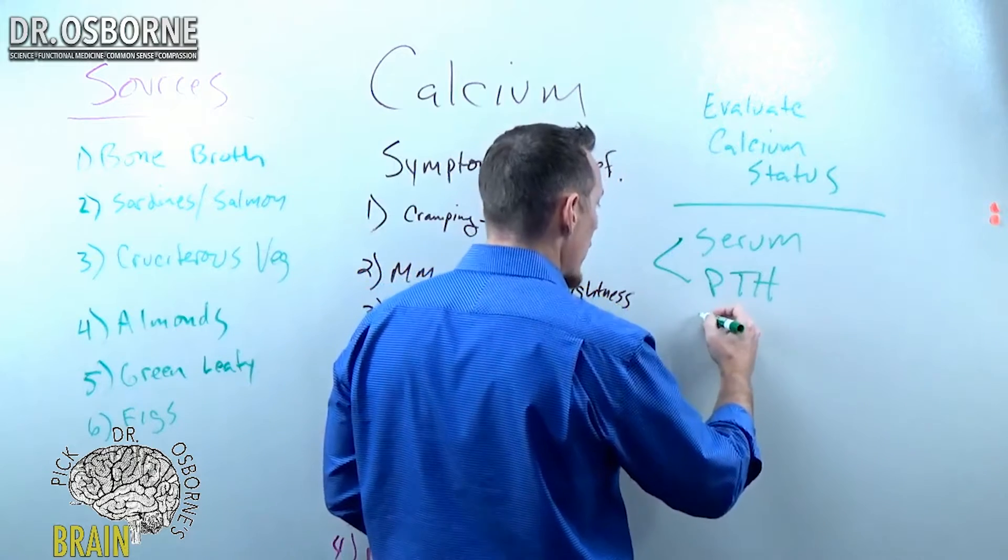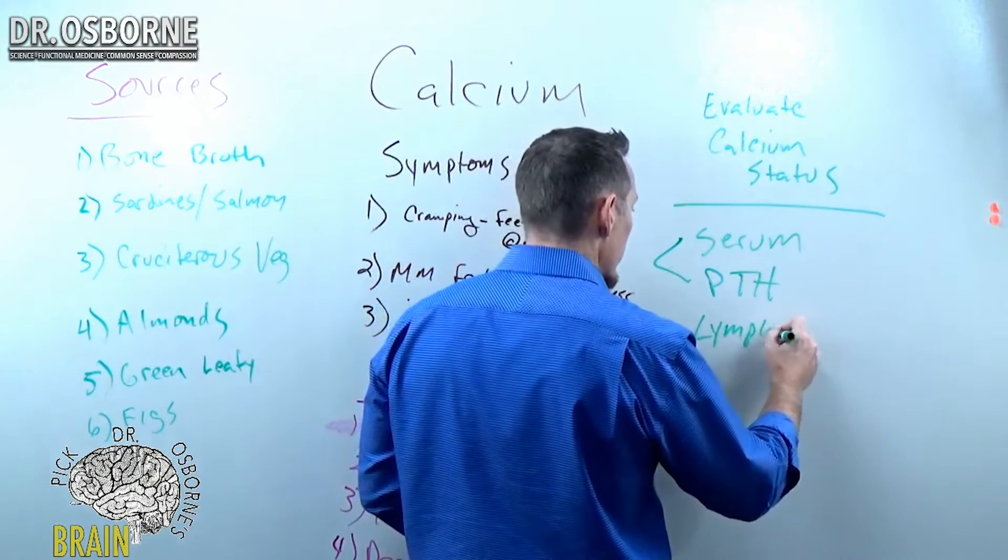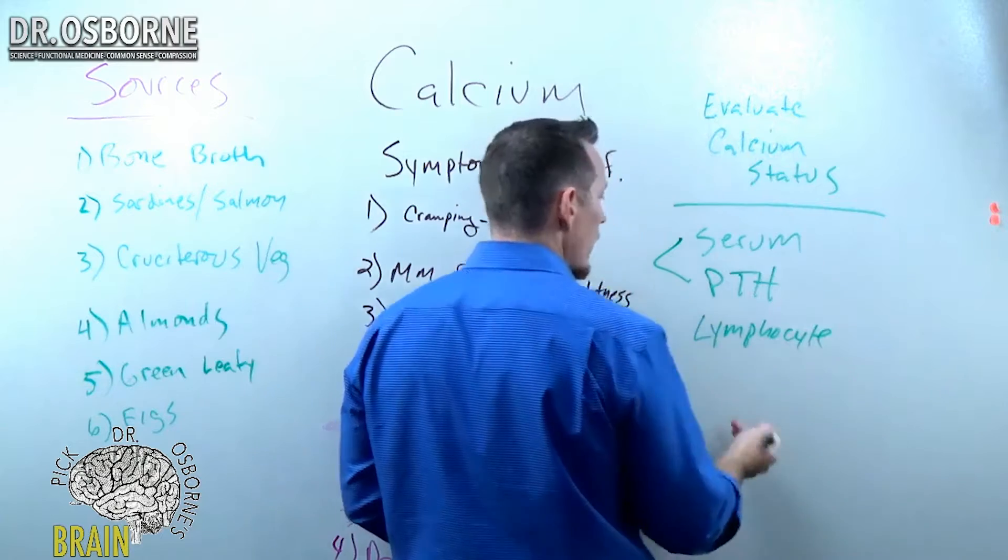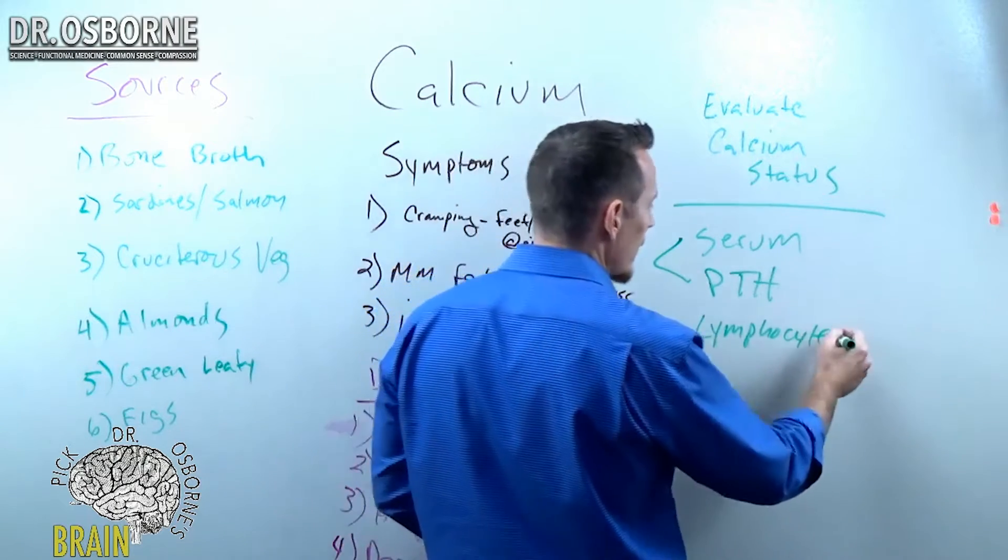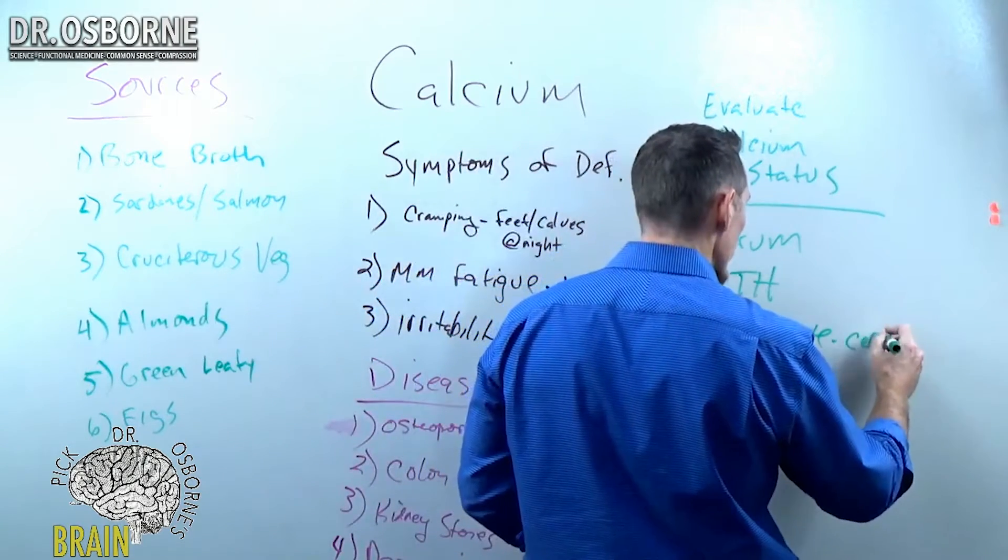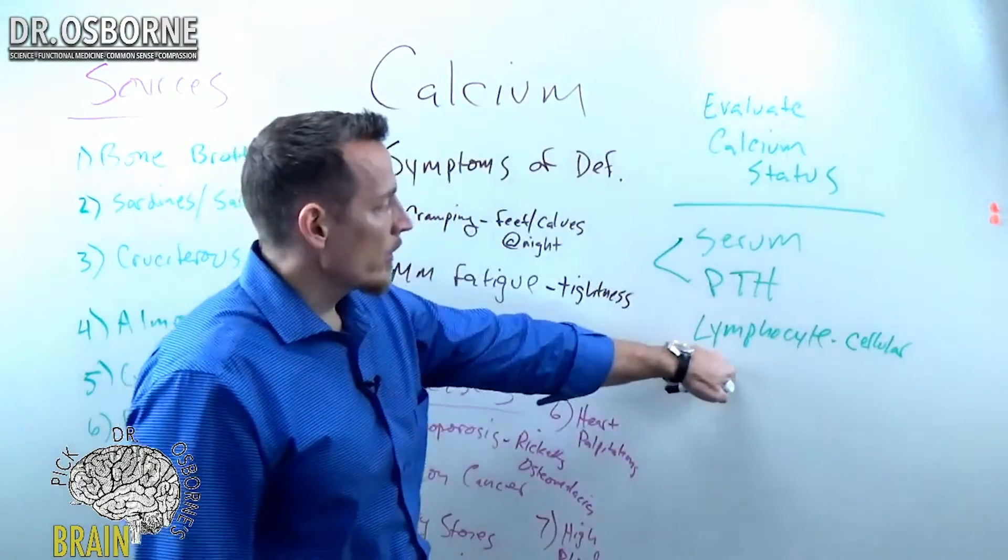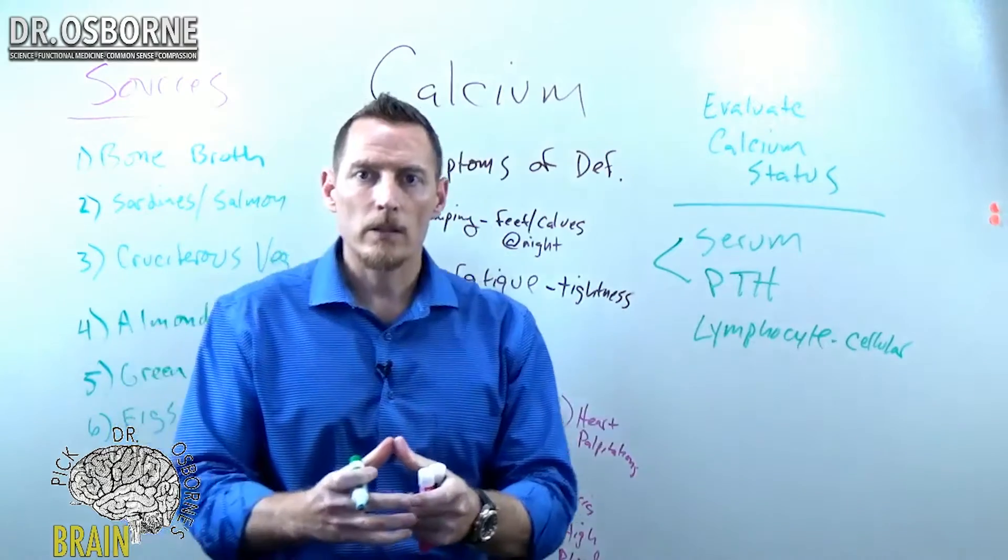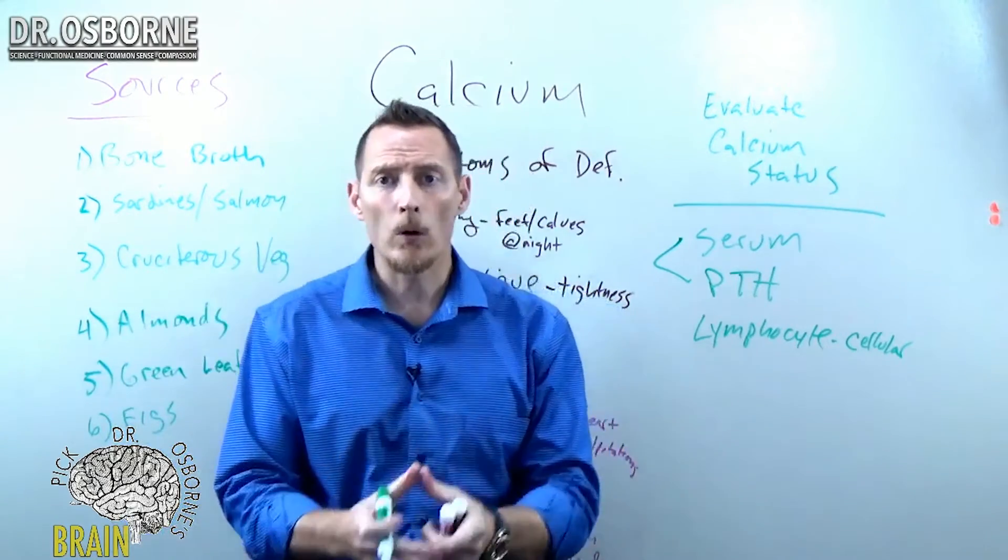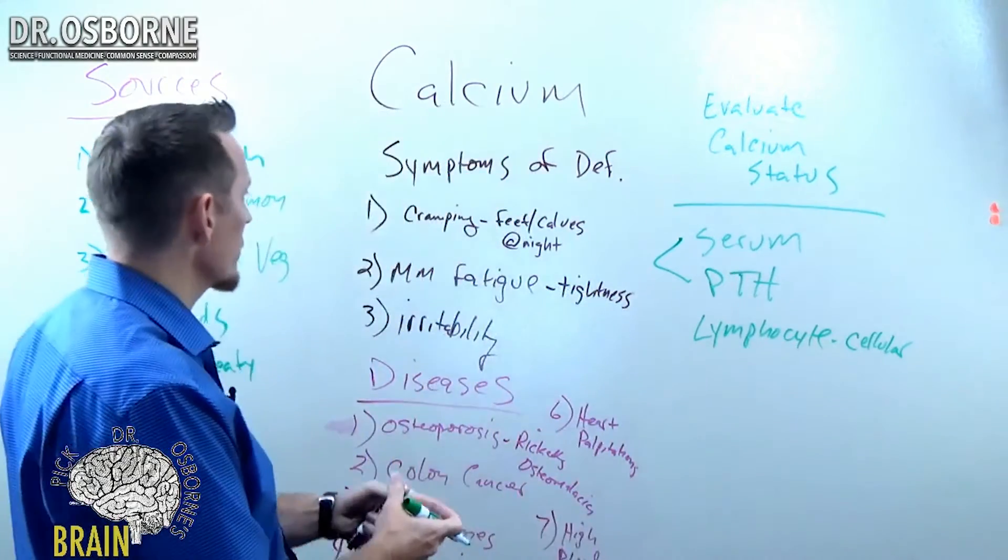Now, we also have what I like to run is lymphocyte levels. So the lymphocyte itself, intracellular, inside the cell, so that we can look at whether or not the inside of the cell has adequate calcium. Now, why is that important?